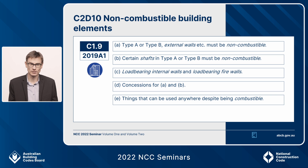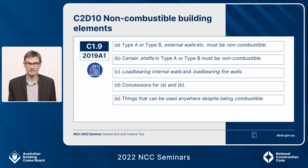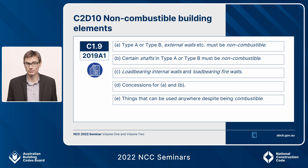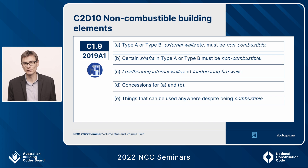Currently in 2019, that list in subclause D has seven things in it — gaskets, caulking, sealants and a few other things. Then you have C1.9E, which is a concession list of things that can be used despite being combustible. They can be used where things need to be non-combustible under A and B, but actually anywhere in the NCC. So C1.9D is a limited concession list, but C1.9E is a concession list for everything in the NCC Volume 1 that needs to be non-combustible.